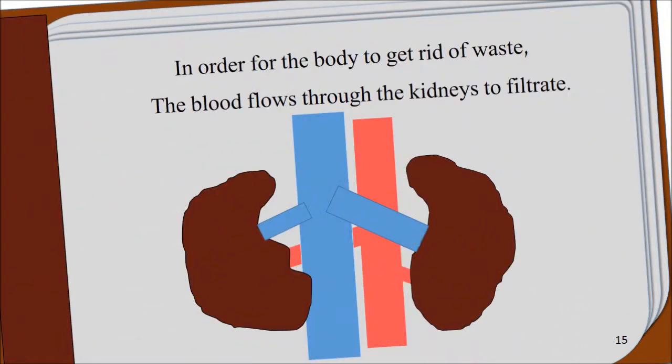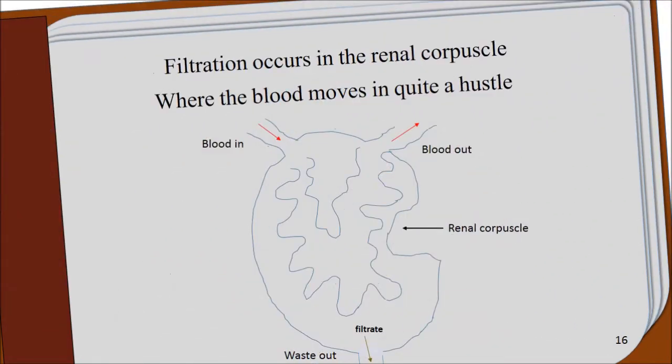In order for the body to get rid of waste, the blood flows through the kidneys to filtrate. Filtration occurs in the renal corpuscle, where the blood moves in quite a hustle.